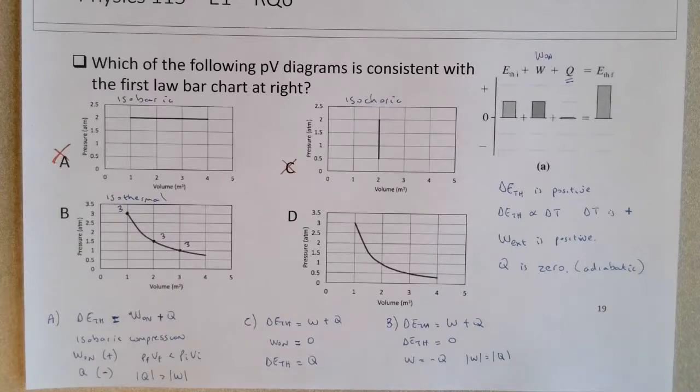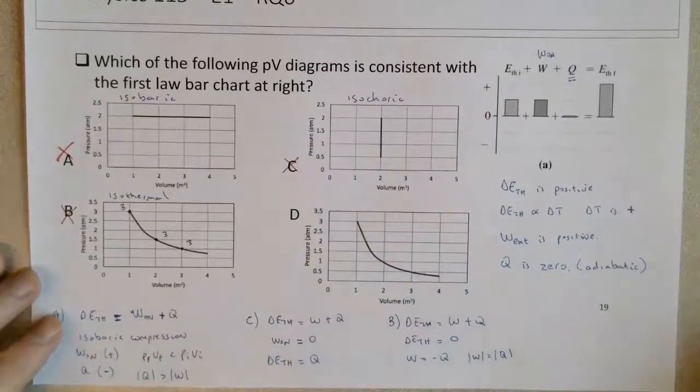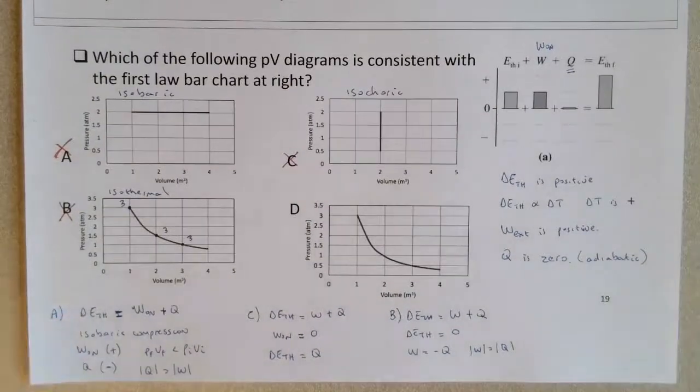That doesn't make any sense for this graph because the bar chart shows an increase in thermal energy. So we can rule out choice B just based on the fact that the thermal energy is changing in the bar chart, but the thermal energy does not change for an isotherm. So that means that work equals negative Q or that they have the same absolute value. And so it definitely can't be graph B. So through process of elimination, you can rule out A, C, and B, which makes D the correct answer.